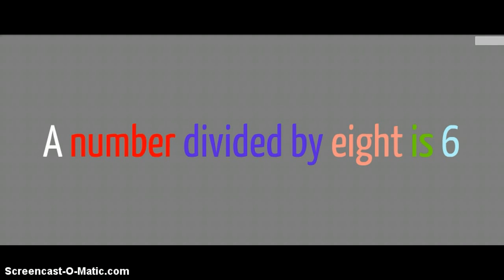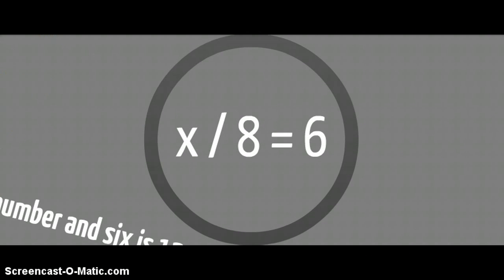It says 'a number' — well, a number in this case is what we're trying to solve for. We're trying to figure out what number it is, so we'll just call that number X. Then it says 'divided by' — you know how to translate that, it's just the math symbol for division. Next it spells out the word '8,' which is just the number 8. The next word is 'is,' and you need to remember this: 'is' should be translated into equals. And the last thing is the number 6, which doesn't need translating. So we can rewrite this equation as X divided by 8 equals 6.